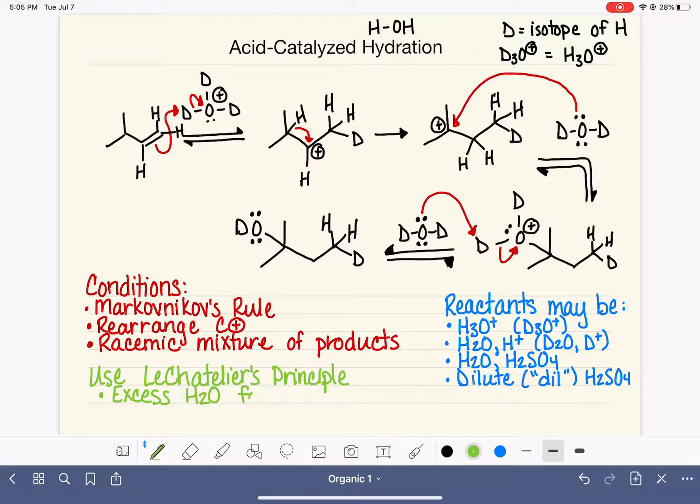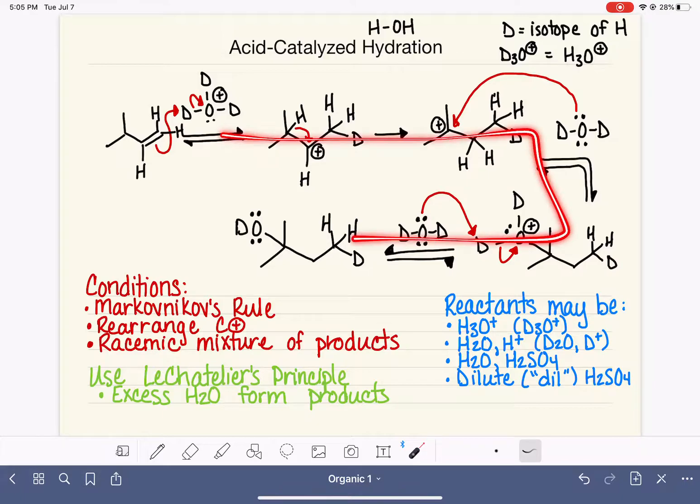So excess of water causes us to form products, pushing the reaction from the alkene to this would be an alcohol.